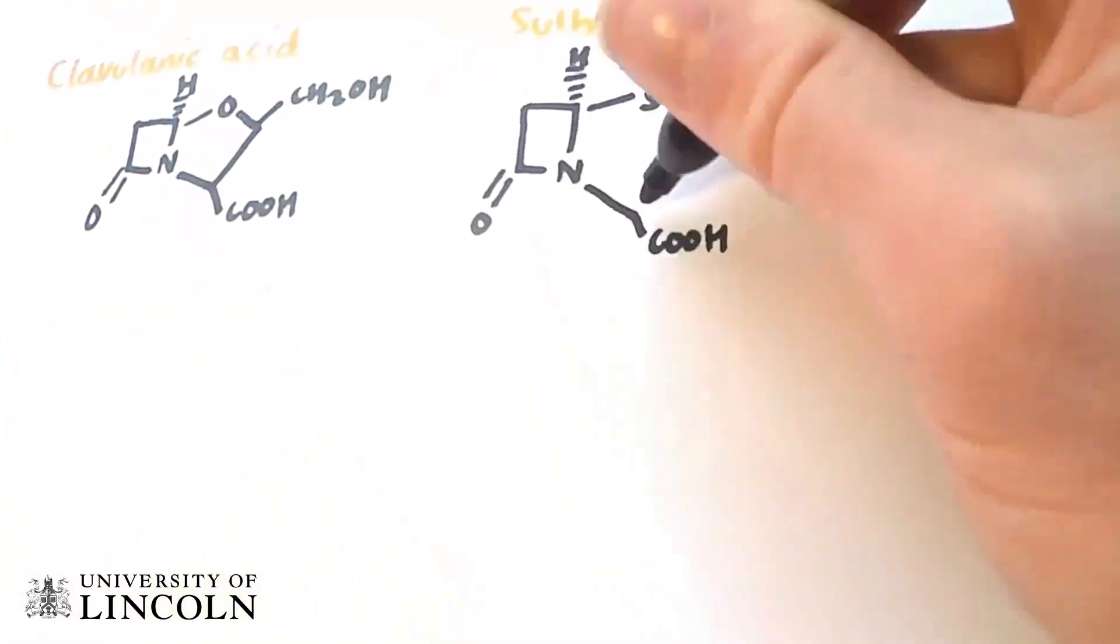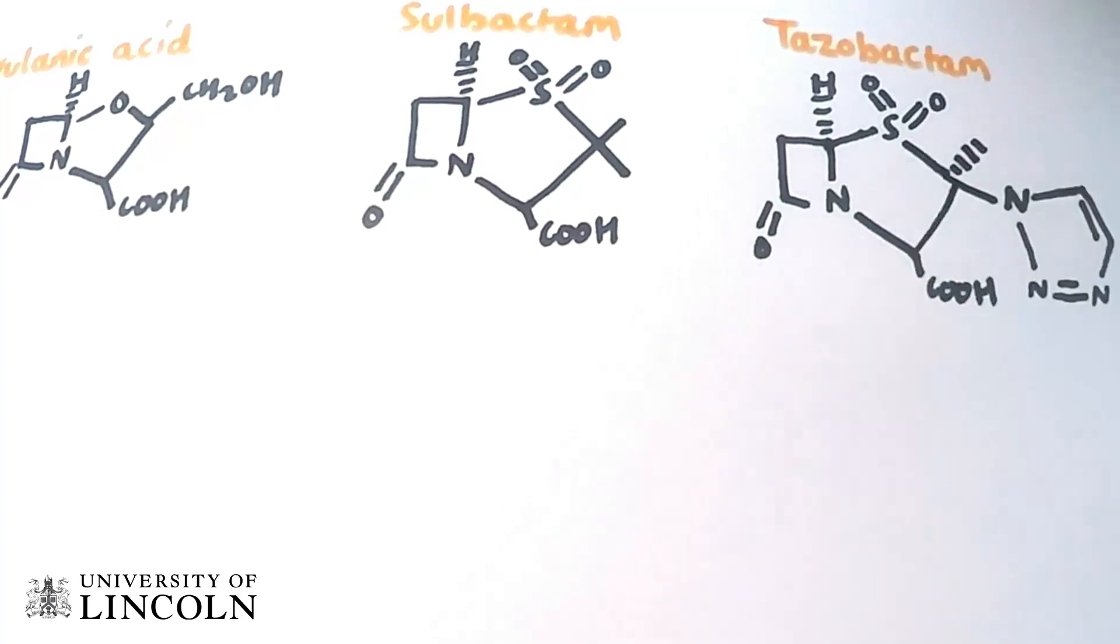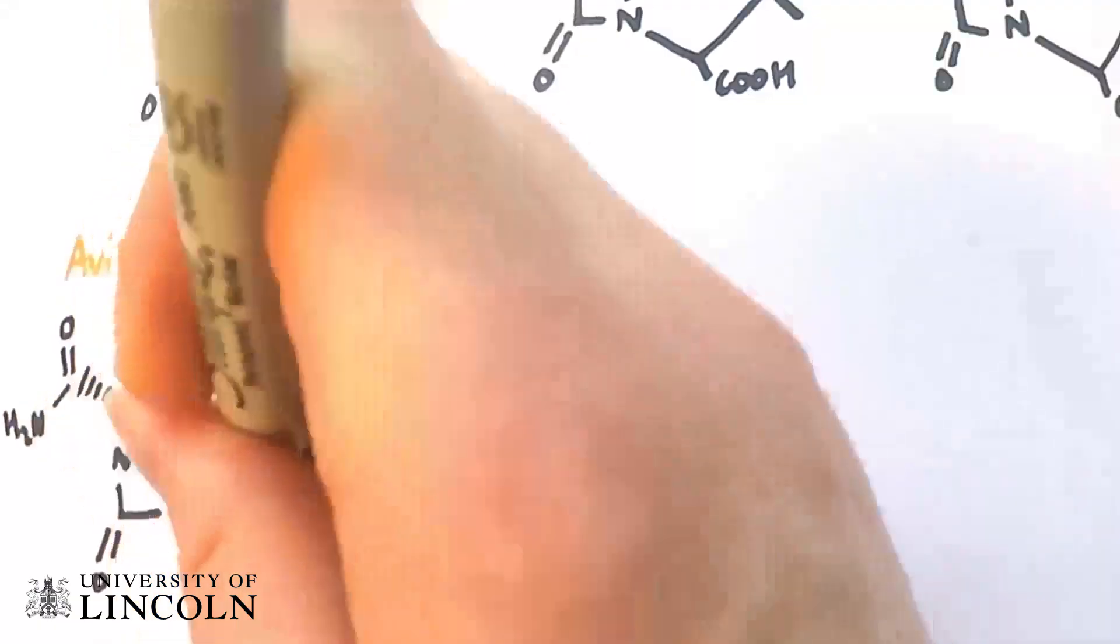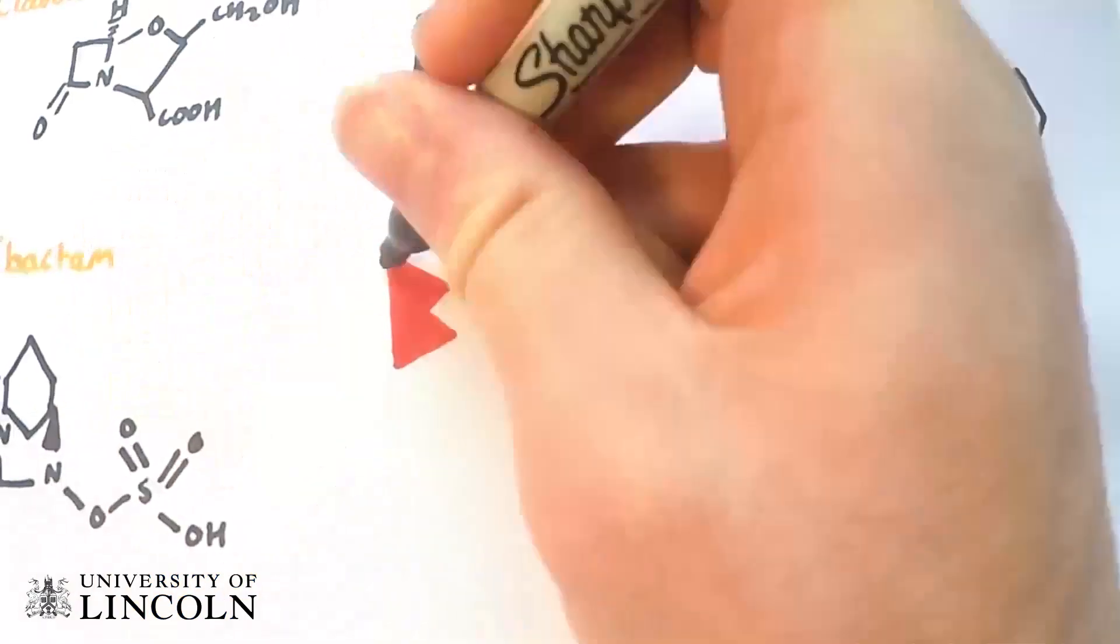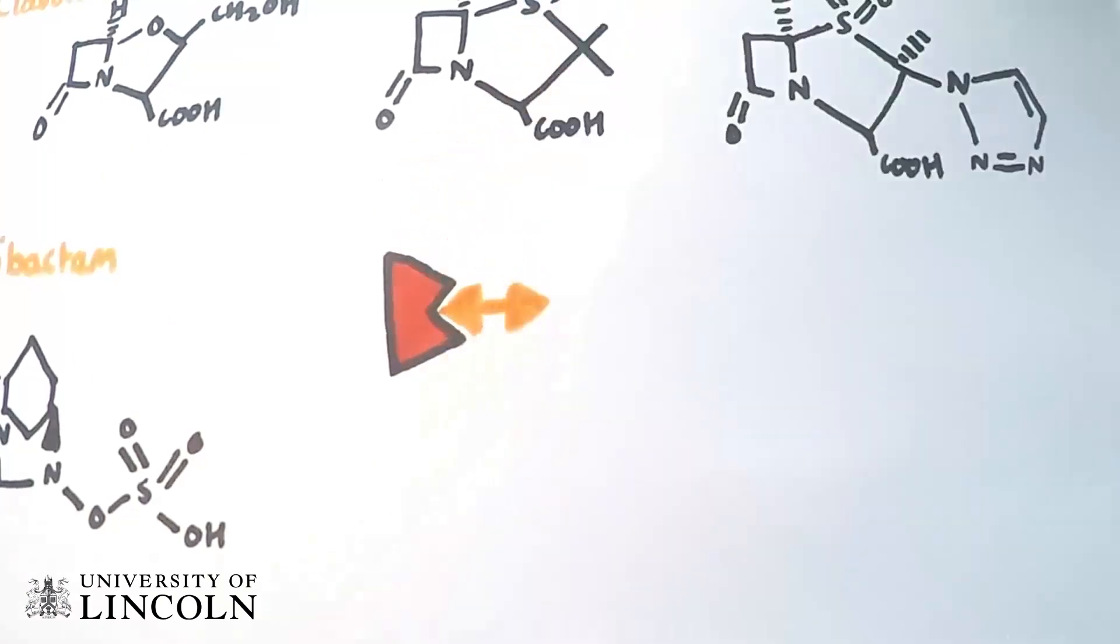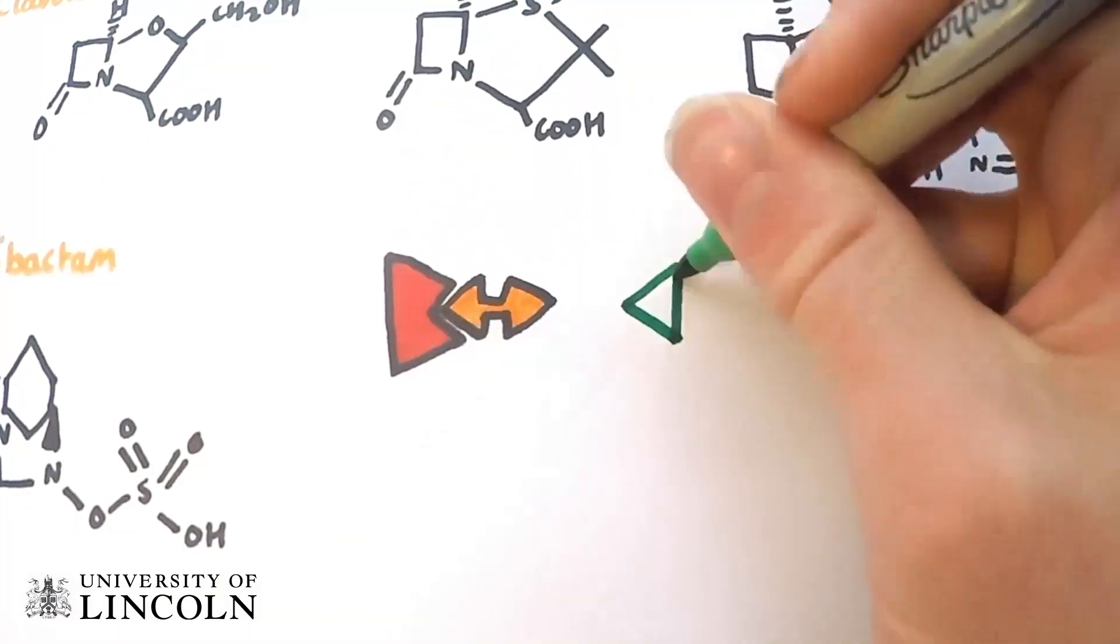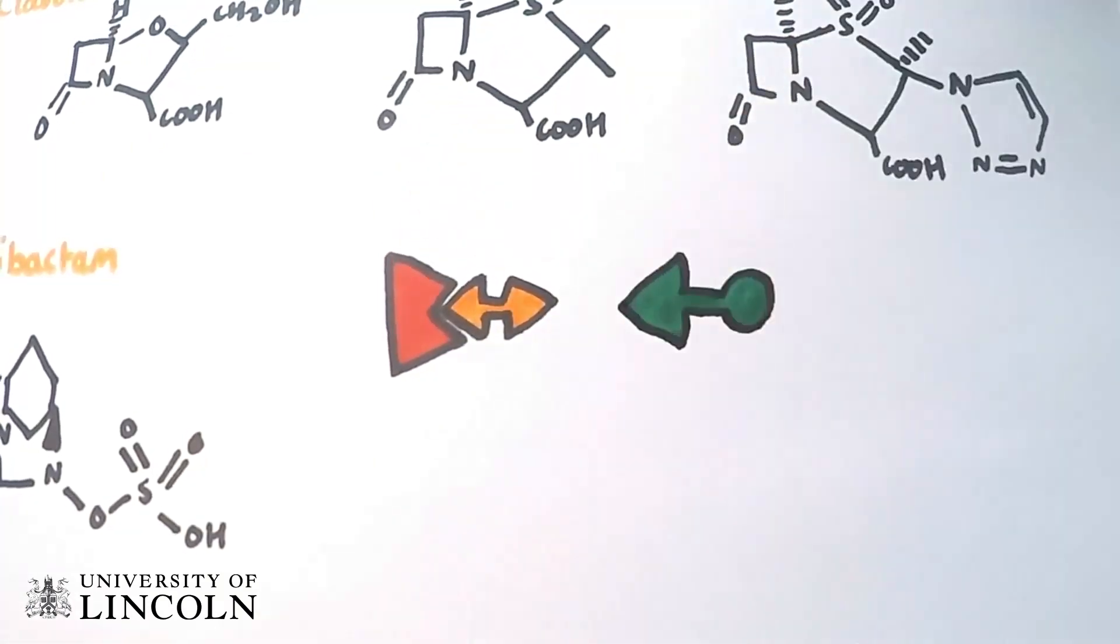These include clavulanic acid, sulbactam, tazobactam, and avibactam. They bind to beta-lactamases, restoring the function of beta-lactam antibiotics. However, inhibitors have no effect against class B metallo-beta-lactamases that use zinc ions.